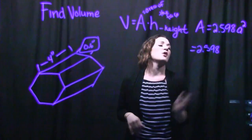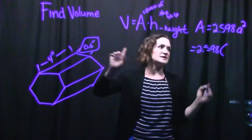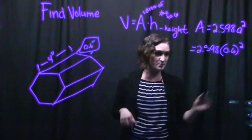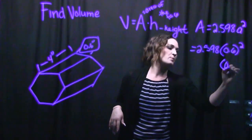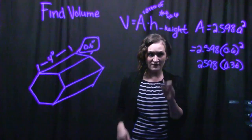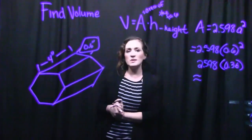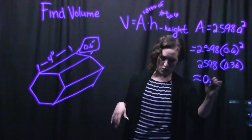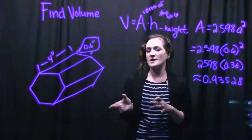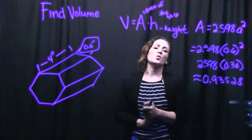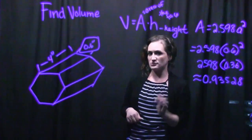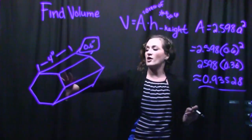So plugging into the formula: 2.598 is part of the formula, and we take A squared, where A is 0.6. So 0.6 times 0.6 gives us 0.36. We multiply that by 2.598, and we get 0.93528. I would recommend not rounding here — if your problem asks you to round, wait until the very end, otherwise you might introduce a small rounding error. So we've now found the area of our hexagon.